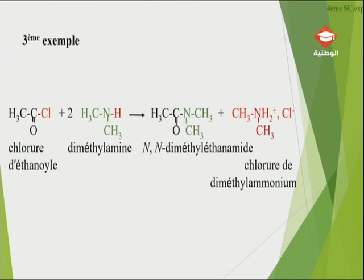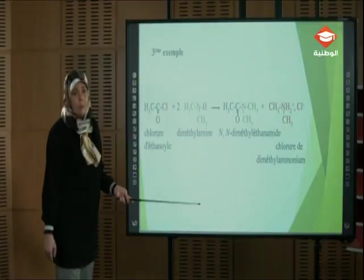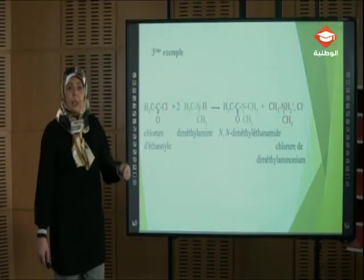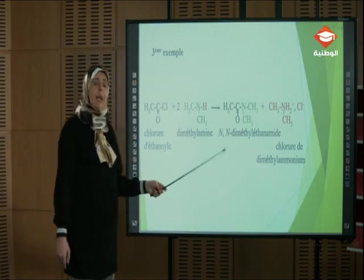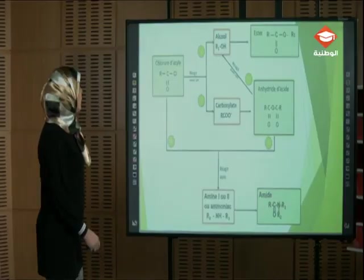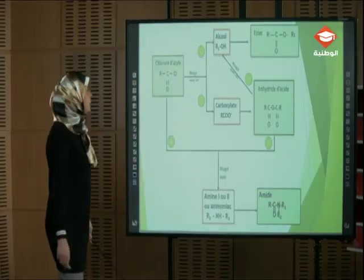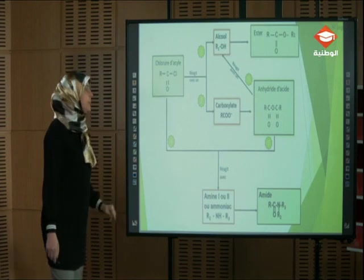Troisième exemple avec une amine secondaire : une molécule perd le H⁺, l'autre le capte pour former le chlorure de diméthylammonium. La molécule ayant perdu l'atome d'hydrogène se fixe au niveau du carbone fonctionnel pour former le N,N-diméthyléthanamide. Le principe est le même — il suffit de l'appliquer à chaque situation.